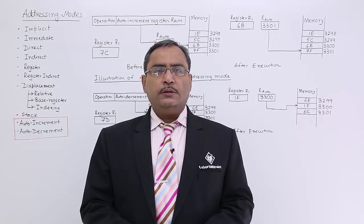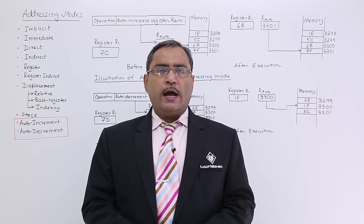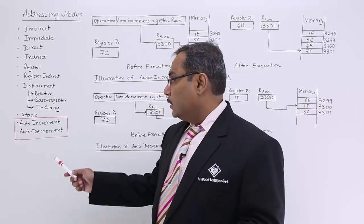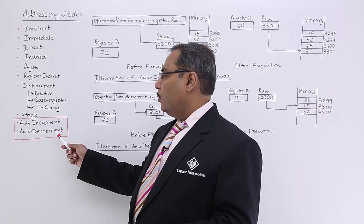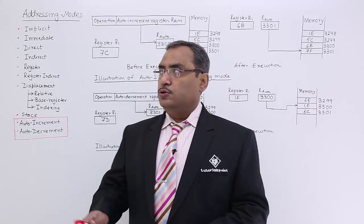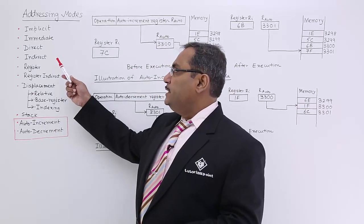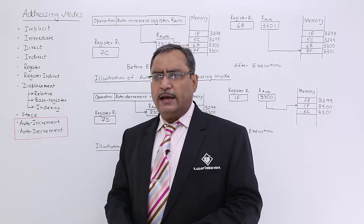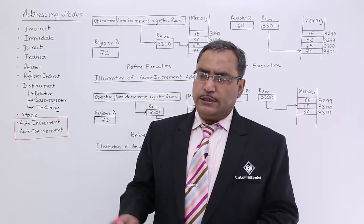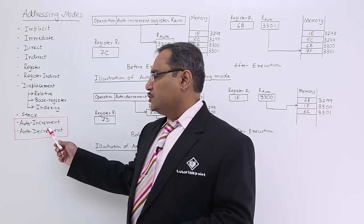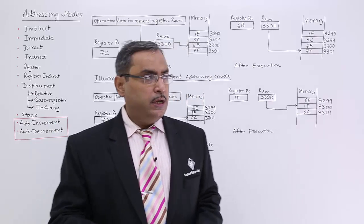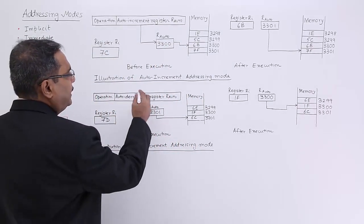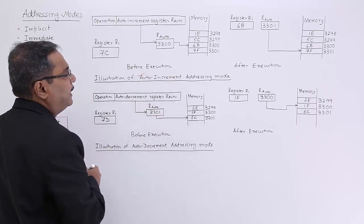In this particular session, I shall introduce another 2 extra addressing modes: auto increment and auto decrement addressing modes. Other than the existing modes — implicit, immediate, direct, indirect, register, register indirect, displacement, and stack — these are 2 additional addressing modes. I shall give a demonstration and illustration of these addressing modes using diagrams. First, we are concentrating on auto increment addressing mode.